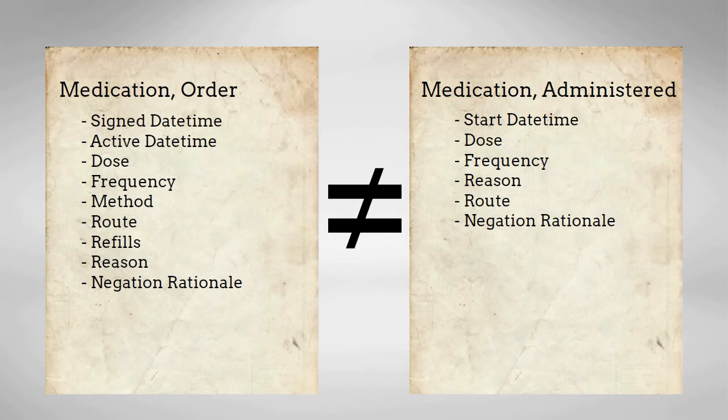And if the medication was ordered for a specific reason. A hospital or provider might also keep track of instances when a medication was specifically not ordered. In this case, the reason for not ordering the medication would be indicated using the negation rationale attribute.